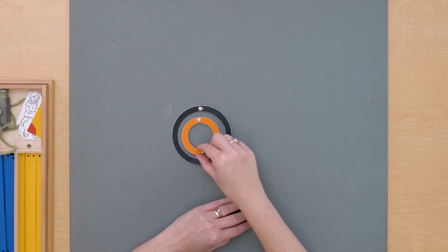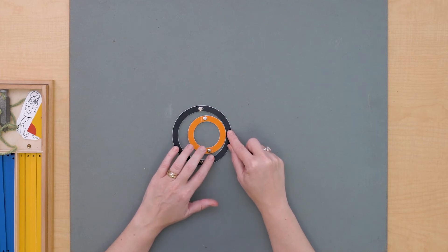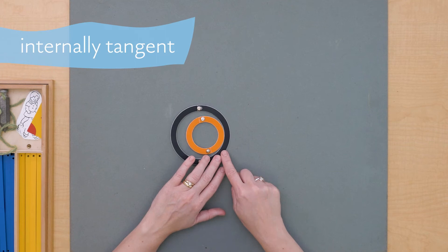Because if I move it inside to just one point where they touch, then we can say that these two circles are internally tangent.